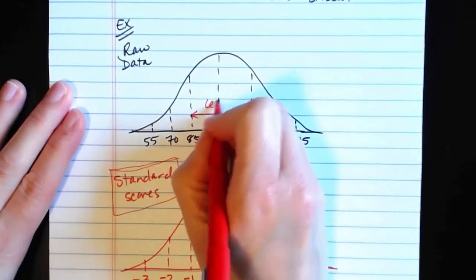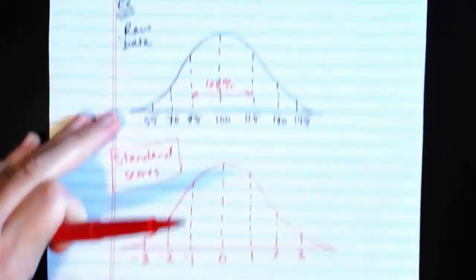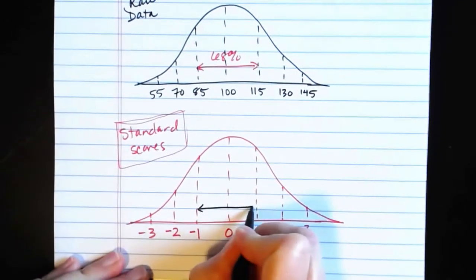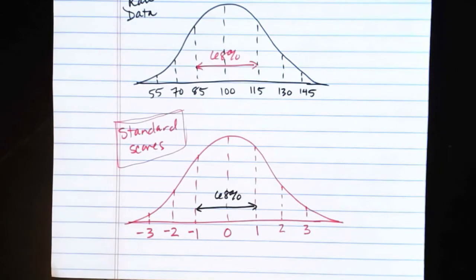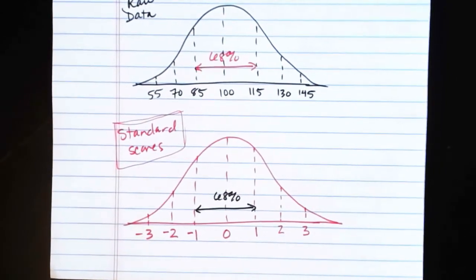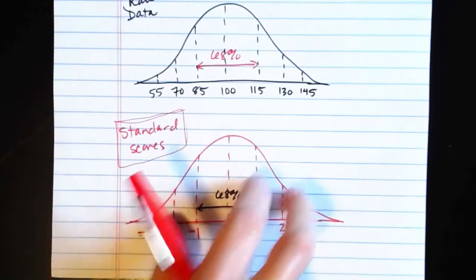We had 68% of our IQ data between 85 and 115. We still have 68% of our data between negative 1 and 1, and 95% between negative 2 and 2, and 99.7% between negative 3 and 3. It's just a different unit system and a different way of looking at the normal curve, so that it all boils down to this one single curve.